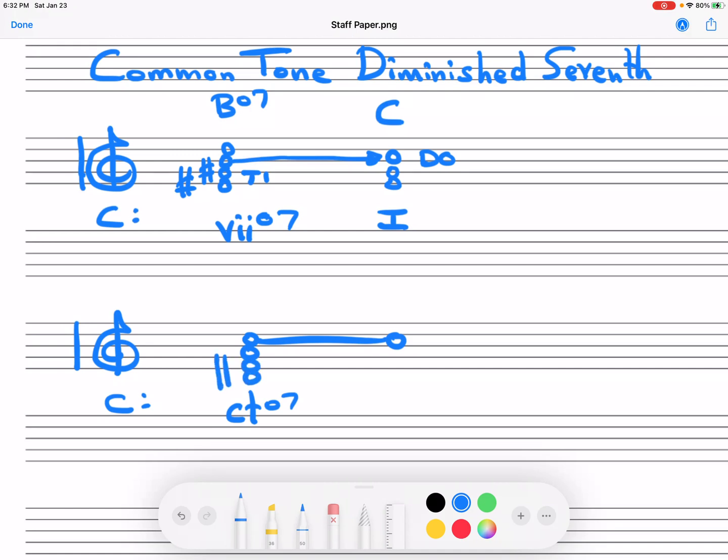And first of all, we're going to just put CT diminished seven to abbreviate for common tone diminished seven. The common tone will be the tonic, so it will be Do. And the common tone usually is spelled like this. So here it is. D sharp, F sharp, A, C.